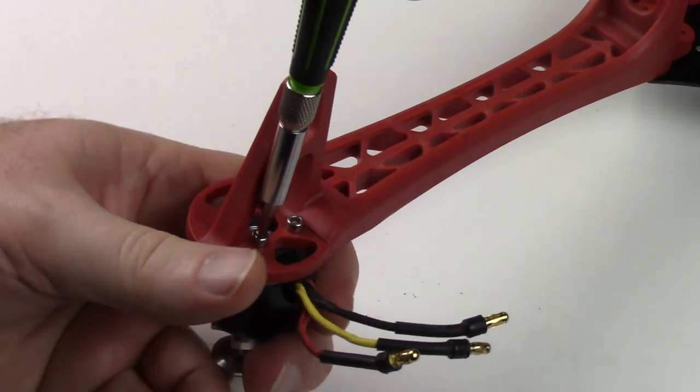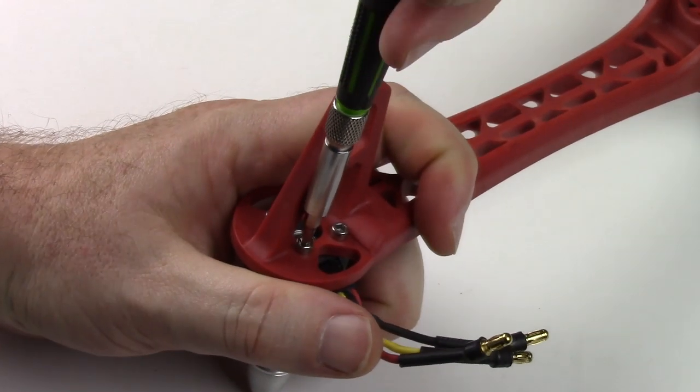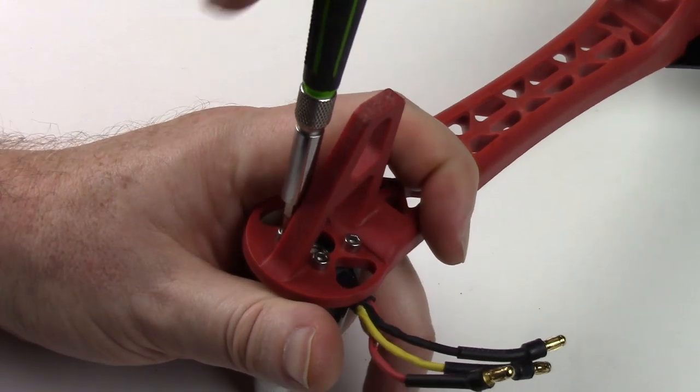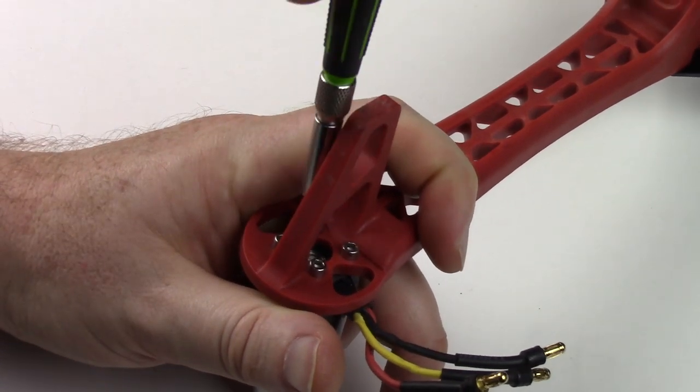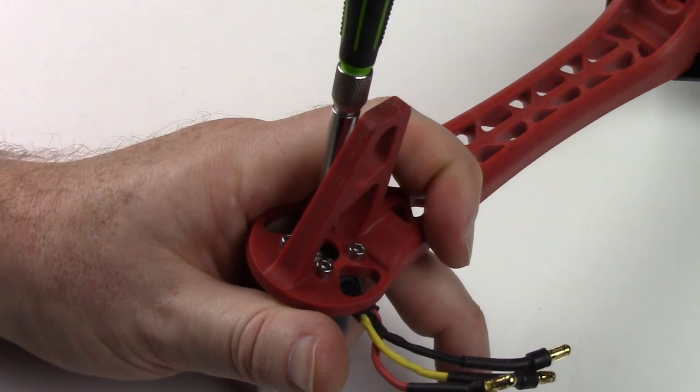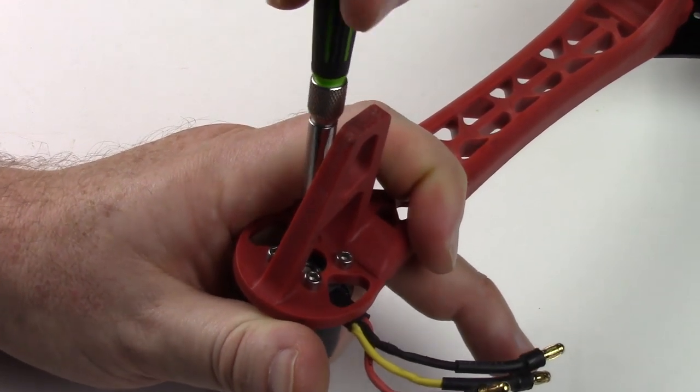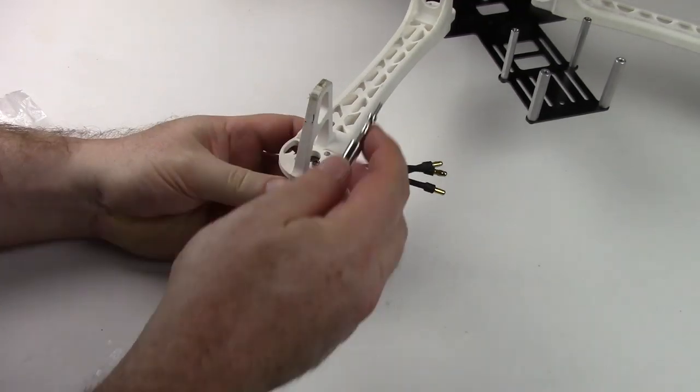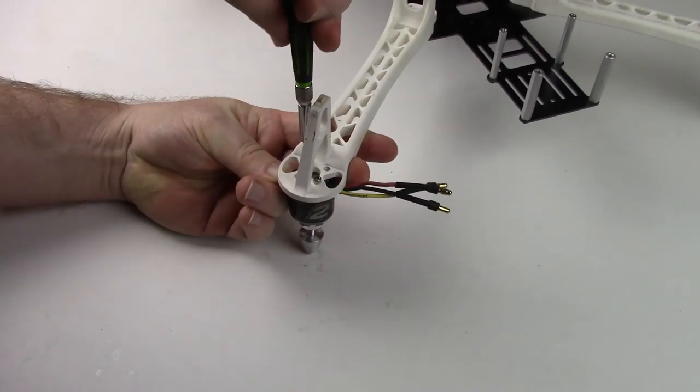And once you've got all four installed, you can go ahead and tighten them down. With the motor bolts keyed like that, the motors are fairly self-aligning, and we just go around and do all four.